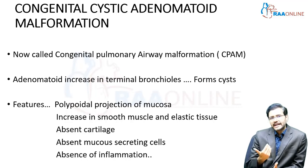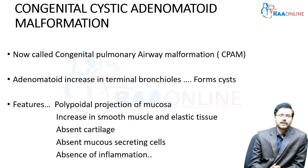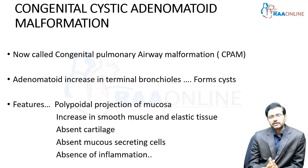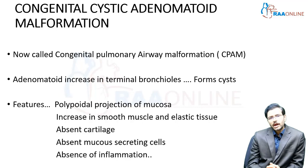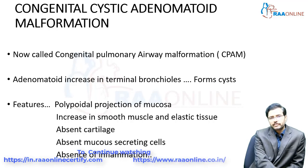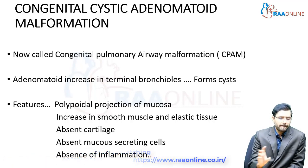The first and most commonly encountered cystic disease of the lung is congenital cystic adenomatoid malformation — a terminology used earlier, now called congenital pulmonary airway malformation (CPAM). Basically, there is an adenomatoid increase in terminal bronchioles forming cysts. There are five important features required: a polypoidal projection of mucosa within the cyst, increase in smooth muscle and elastic tissue, absent cartilage, absent mucous secreting cells, and absence of inflammation. If these five characteristics are fulfilled, we can term that cystic disease of the lung as a CPAM.